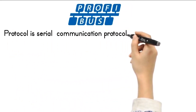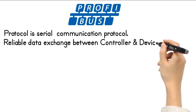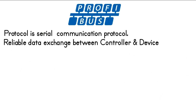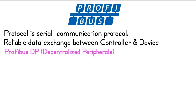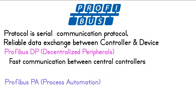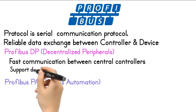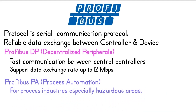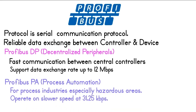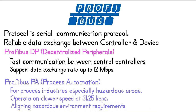PROFIBUS Protocol. PROFIBUS is a serial communication protocol that allows reliable data exchange between control systems and field devices. There are two PROFIBUS types: PROFIBUS DP, decentralized peripherals, and PROFIBUS PA, process automation. PROFIBUS DP is used in factory automation for fast communication between central controllers and field devices, supporting data exchange rates up to 12 Mbps. PROFIBUS PA is suited for process industries, especially hazardous areas. It is a two-wire system for both power and data, operating at 31.25 Kbps to align with hazardous environment requirements.